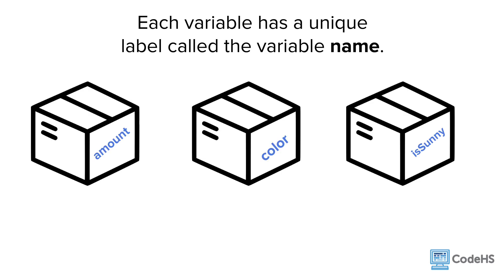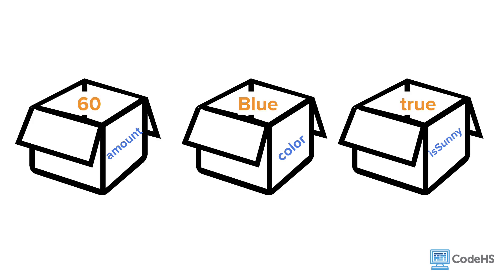Each variable has a unique label called the variable name. In this example we have three variables named amount, color, and isSunny. You can then store a value in each box. Here the amount box contains the value of 60, the color box contains the value of blue, and the isSunny box contains the value of true.